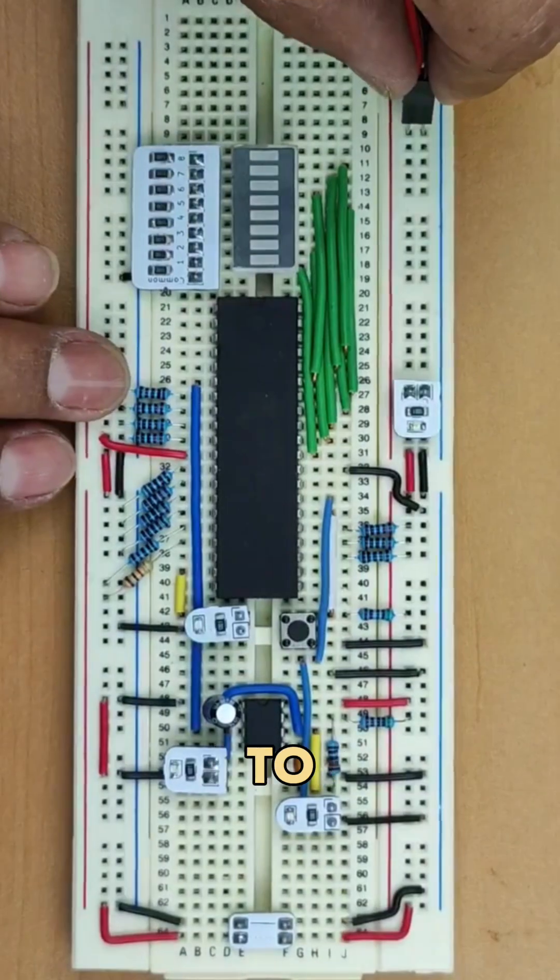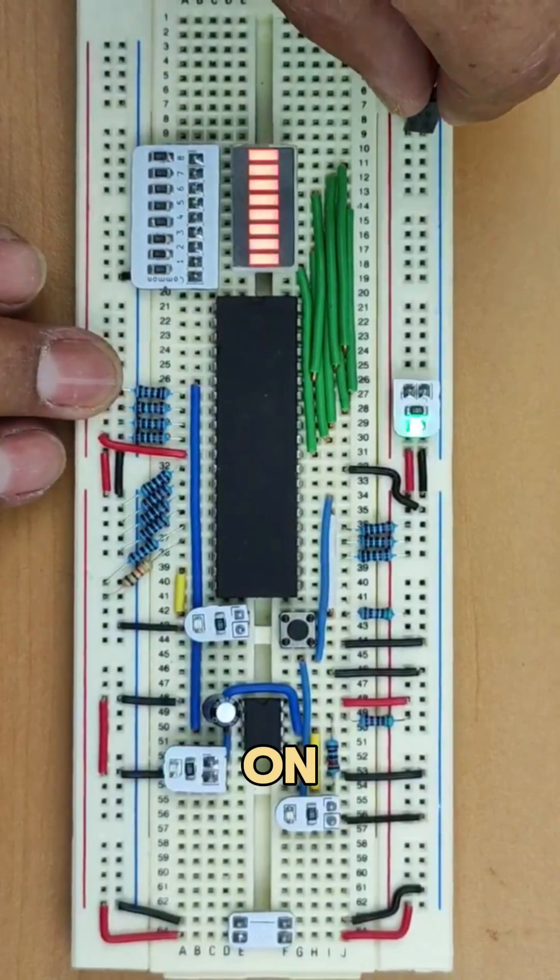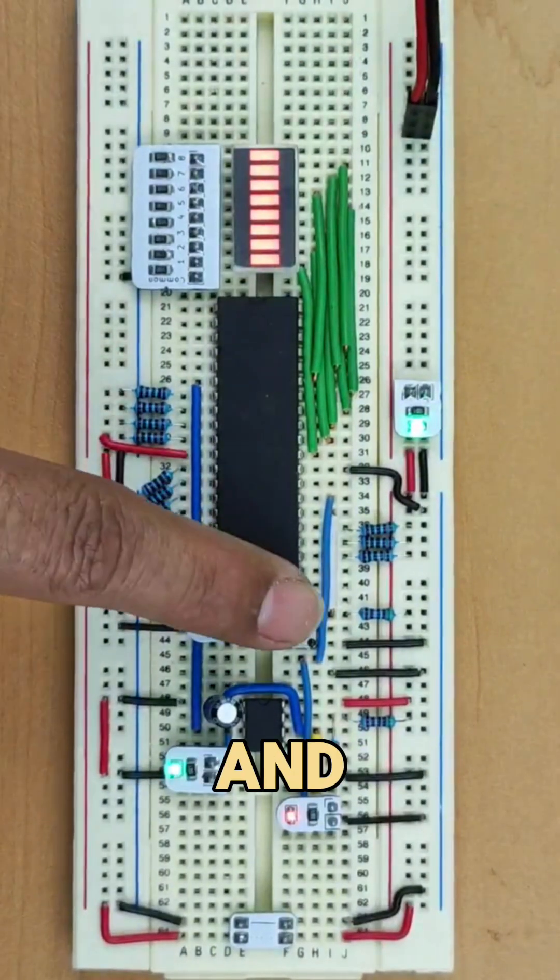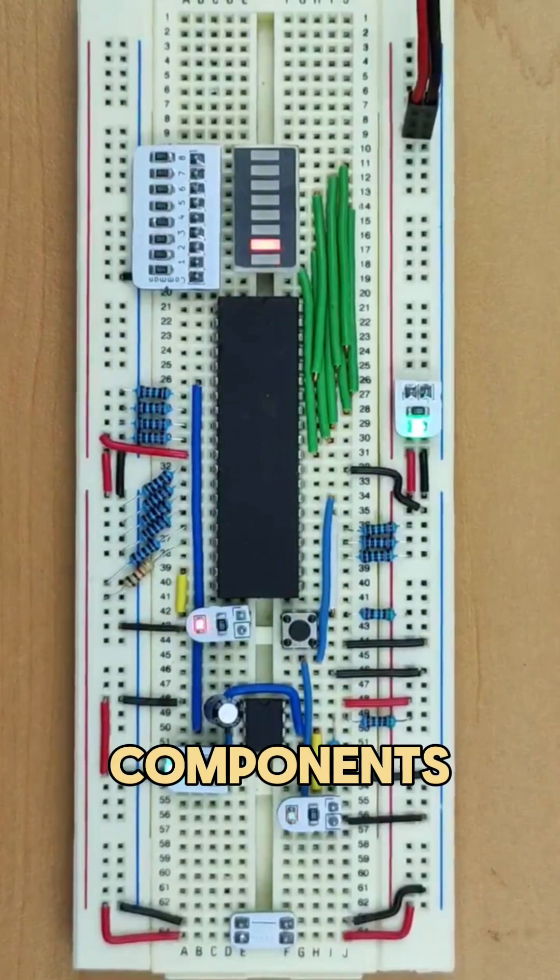Breadboards make it easy to experiment with both permanent on and button-controlled circuits, and Ohm's Law makes sure they work without damaging components.